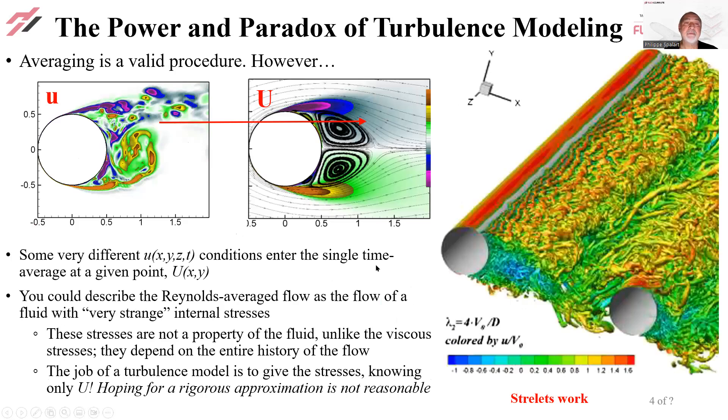The power of turbulence modeling is that it goes from this very complex simulation to a flow field that is steady and often has fewer dimensions. In this case, we go from a field of (x,y,z,t) to an average which is only a function of x and y. But we need those Reynolds stresses.